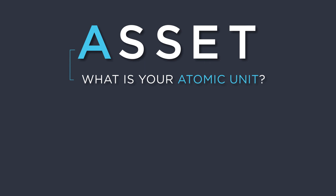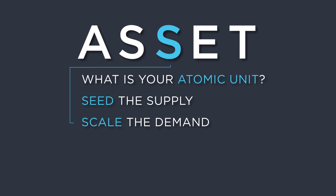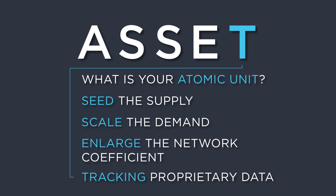In summary: figure out what the atomic unit is — the smallest product unit that your network revolves around. Seed the supply: how do you get users to create or buy into the atomic unit? Scale the demand: how do you get users to consume the atomic unit? Enlarge the network coefficient: how do you get users to engage more, connect more, log in more? Track proprietary data: how can you use the data to grow other business models? The more users you have, the more engaged they are, and the more connected they are, the faster your product will grow.